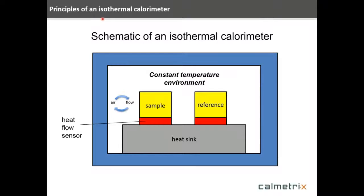Let's talk about the basic principles of an isothermal calorimeter. Here you see a schematic. Starting on the inside, we have the sample and the reference. The sample sits inside a 125-milliliter sample cup — these are reusable. We run that against a reference material, typically a metal that has no reaction during the experiment. This is a differential technique to improve baseline noise. Both the sample and reference sit on top of heat flow sensors, which are thermoelectric devices, and they connect to a heat sink — in this case, a large aluminum mass.